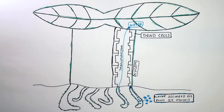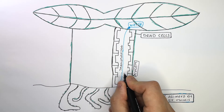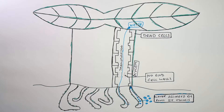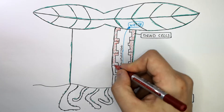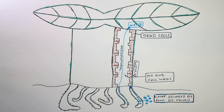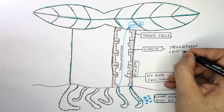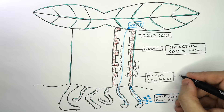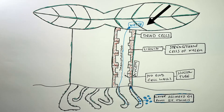So what are the adaptations of the xylem? The xylem cells are dead cells with no end cell walls. The dead cells of the xylem have got lignin in them, so the cell walls have lignin in them whereby lignin strengthens the cells of the xylem. The fact there are no end cell walls in the xylem means that this forms a hollow tube for water to be transported from the root to the leaves via transpiration.